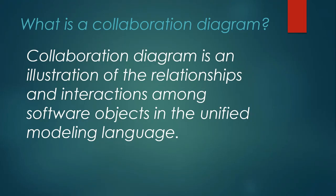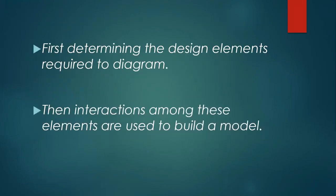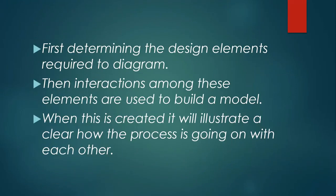Let's move on to the basic steps to create a collaboration diagram. First, we have to determine the design elements required for the diagram. We then identify all passing messages and relationships between objects. We build the model from those elements and add notations to represent messages passing between objects. This makes it clear how the process flows between each object.